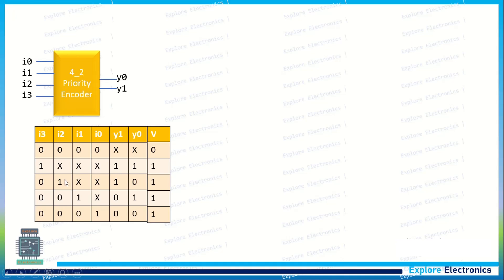And it will be encoded to 1, 0. This is also a valid encoding. That's why the valid signal is 1.